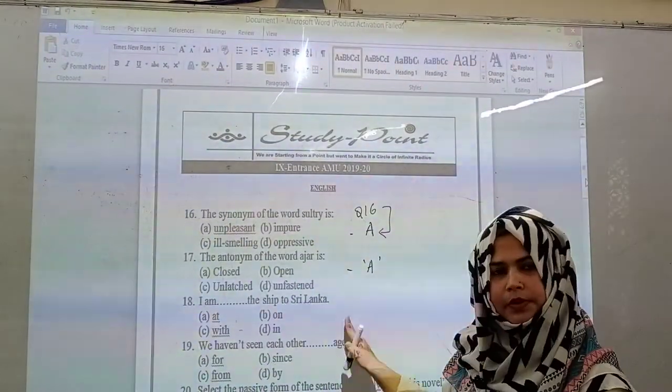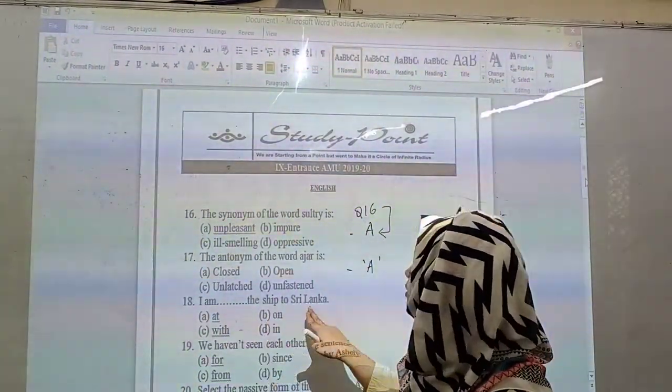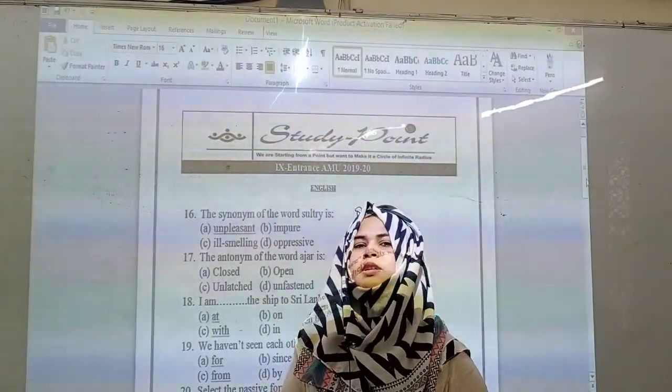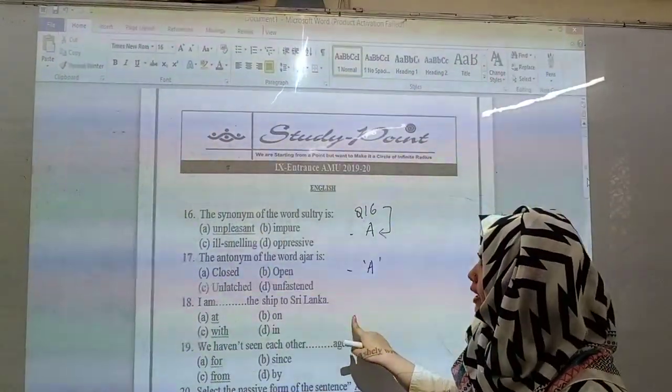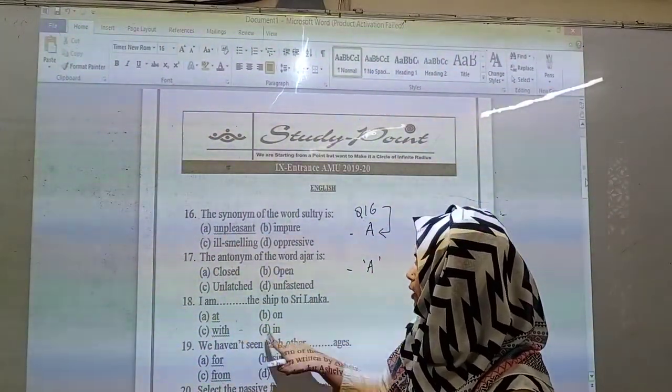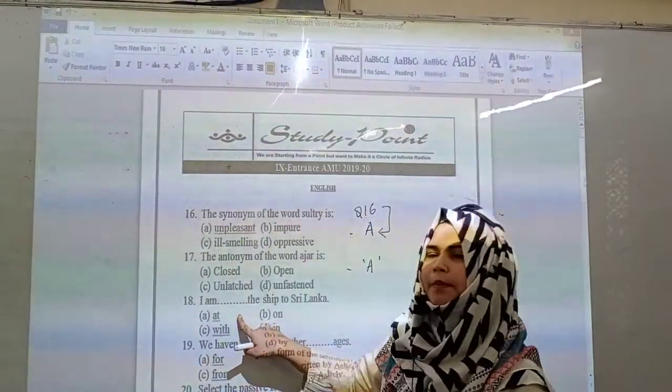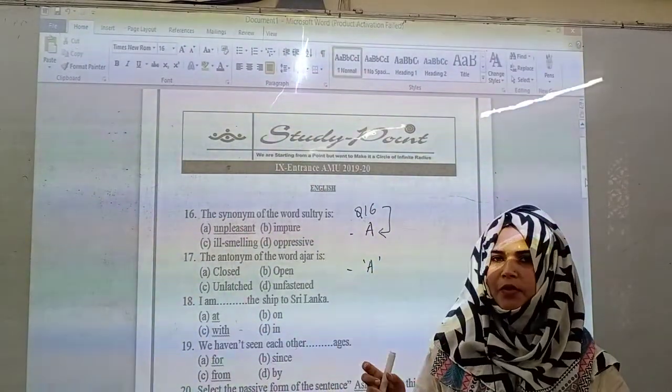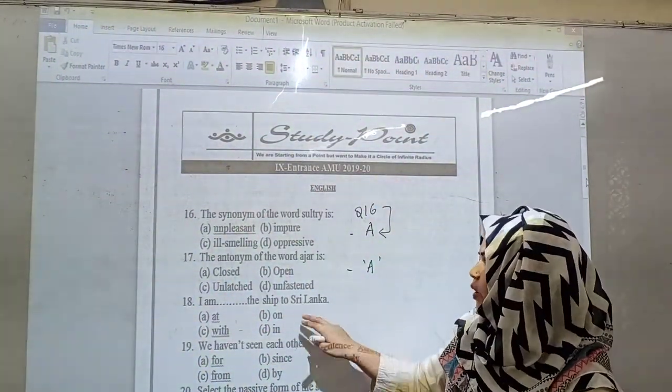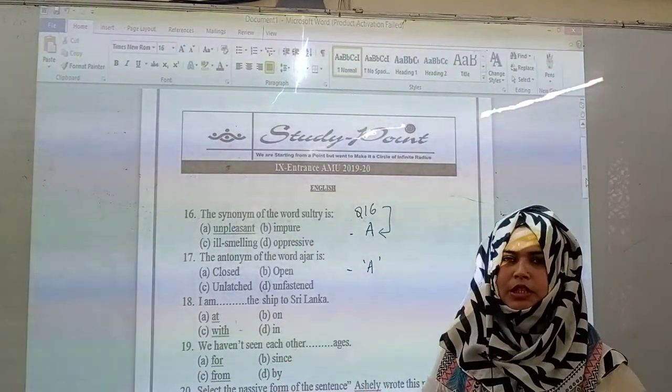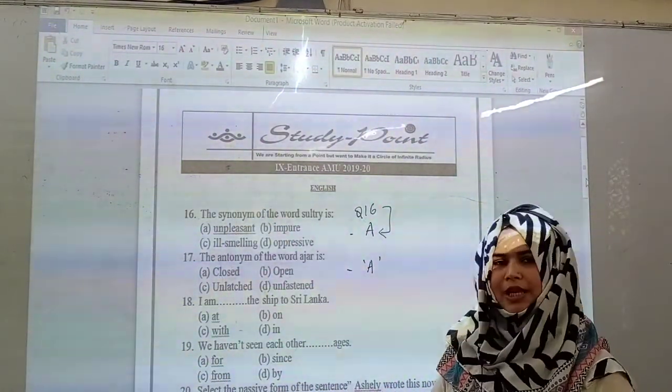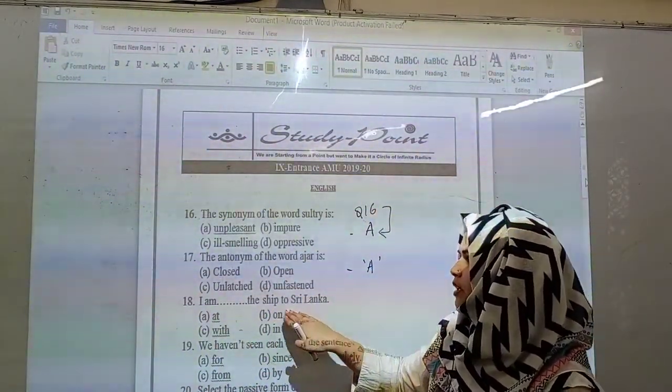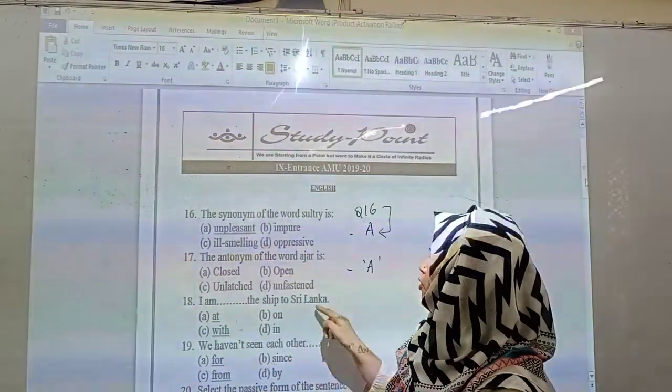Then question number 18: I am dash the ship to Sri Lanka. Here you have to know prepositional usage. The options are at, on, with, or in. At is used to define location, for example when we say at the gym or at the cinema. On means on top of something. With is associated with whom. In means inside. So here: I am at the ship to Sri Lanka, again option A.